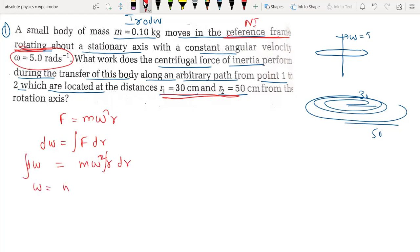So this is equal to m omega square by 2 r square. The limit is 30 cm to 50 cm, so 0.3 to 0.5 m is equal to 0.1 into 25 by 2 into 0.16.